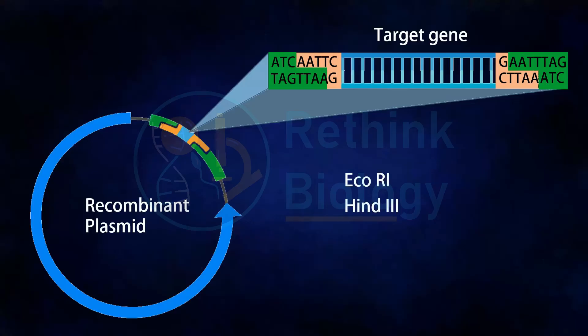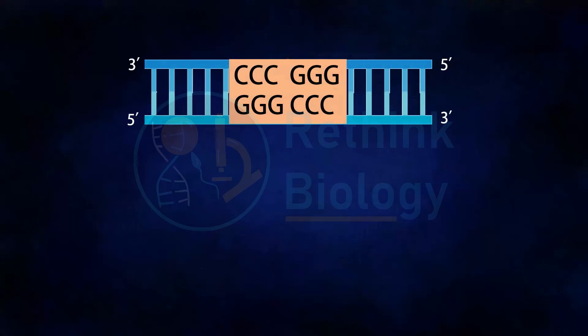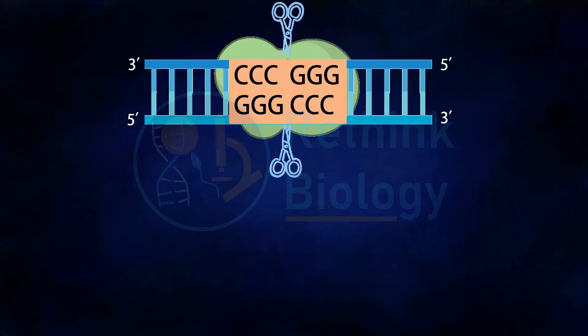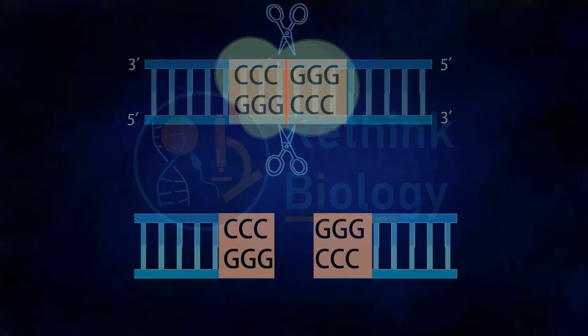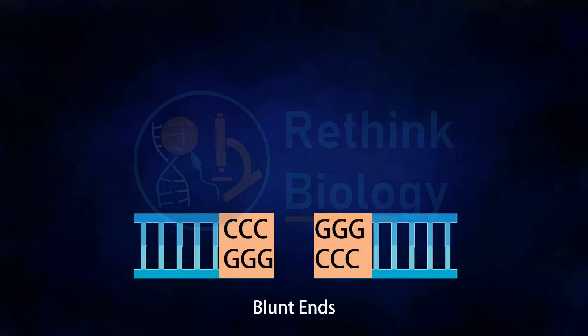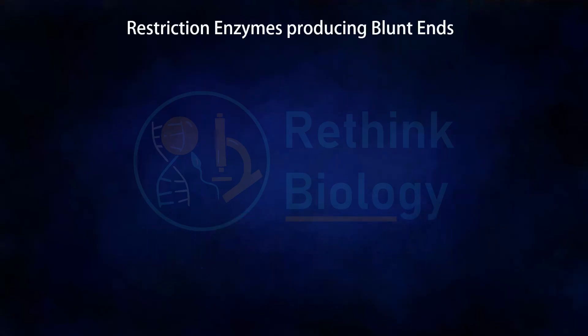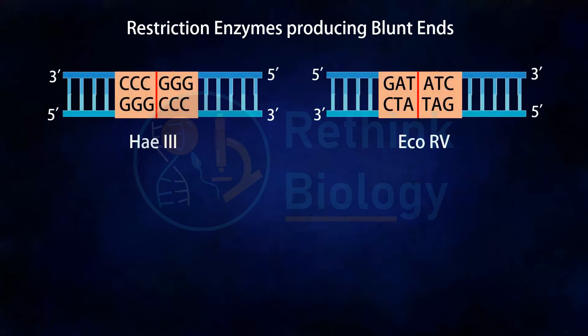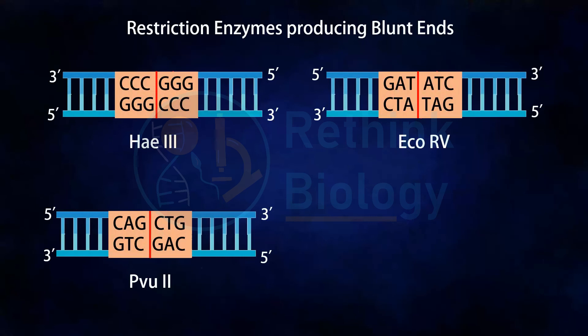However, some restriction endonucleases produce flush cuts with blunt ends, which lack sticky ends. Even flush cuts with blunt ends can be altered to make them suitable for making recombinant DNA. Examples of such enzymes are HaeIII, SmaI, etc.